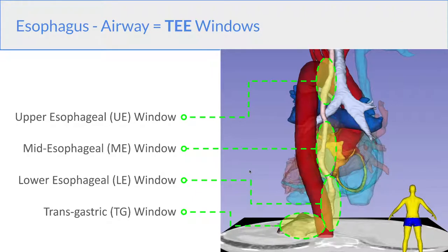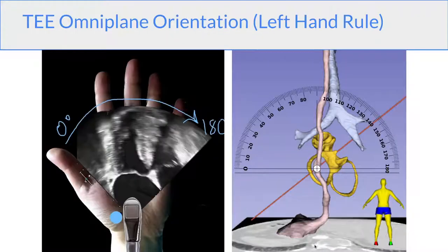So these are the typical definitions for the windows for TEE. Above the left main bronchus, we have the upper esophageal window. Behind the left atrium, we have the mid-esophageal window. Below that, the lower esophageal window, and then the transgastric window. Now to visualize the views in 3D space, you have to remember the left-hand rule. So if you pretend that the echo probe is in your wrist, and the omniplane is represented by your left hand, rotation of your left hand goes from 0 to 180. And again, this is the view from the esophagus looking towards the heart base.